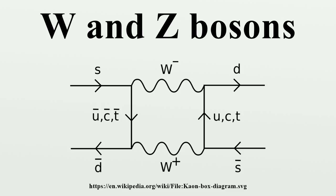Basic properties. These bosons are among the heavyweights of the elementary particles, with masses of 80.4 GeV/c² and 91.2 GeV/c² respectively. The W and Z bosons are almost 100 times as heavy as the proton — heavier, even, than entire atoms of iron. The masses of these bosons are significant, because they act as the force carriers of a quite short-range fundamental force.